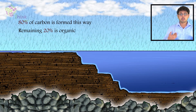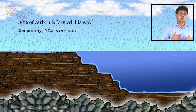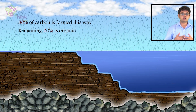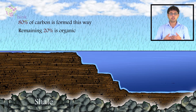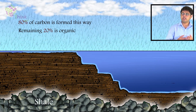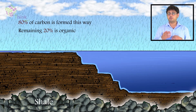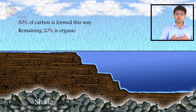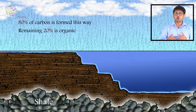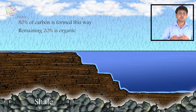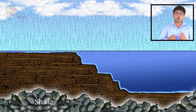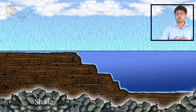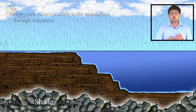Heat and pressure compress the mud and organic carbon over millions of years, forming sedimentary rocks such as shale. In special cases, when dead plant matter builds up faster than it can decay, layers of organic carbon become oil, coal, or natural gas instead of sedimentary rock like shale. The slow carbon cycle returns carbon to the atmosphere through volcanoes.